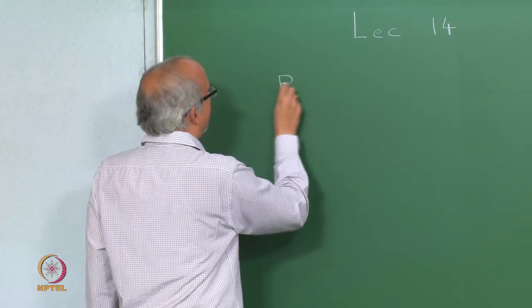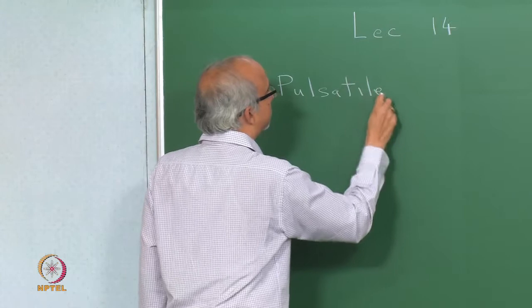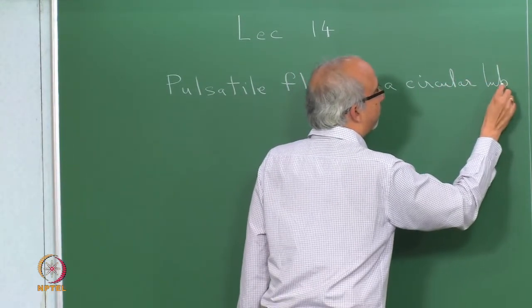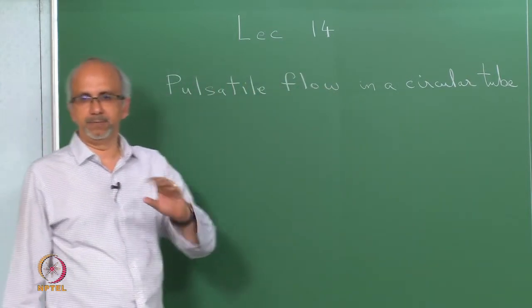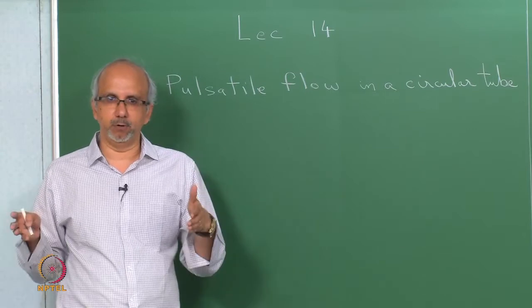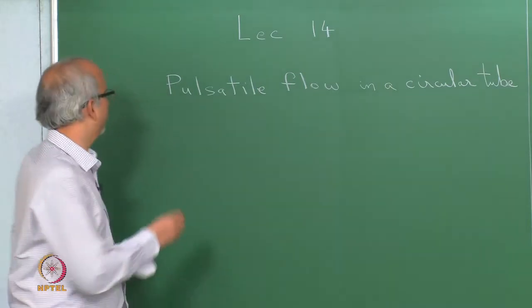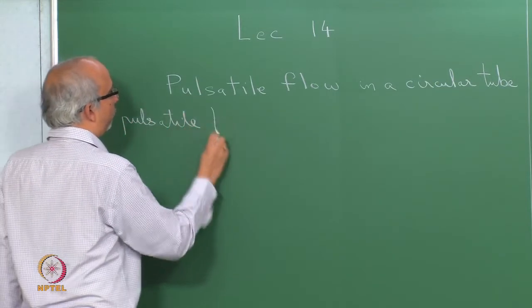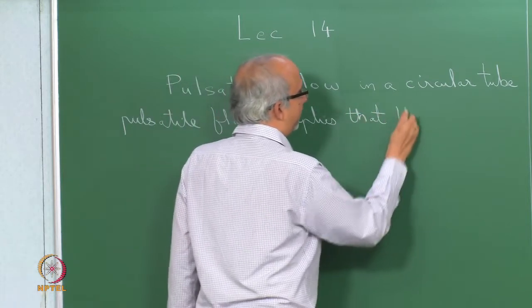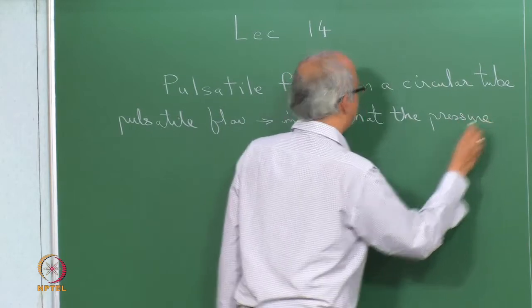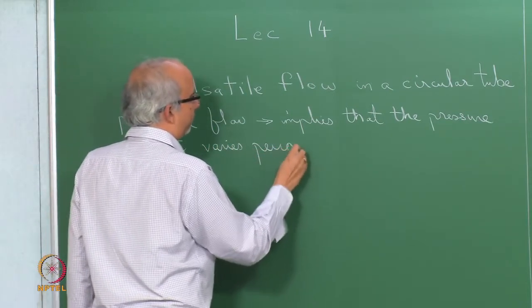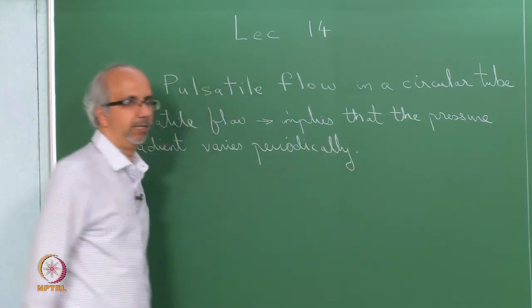The problem here is pulsatile flow in a circular tube. You have a circular tube with liquid flowing through it. By pulsatile flow, I mean that the pressure gradient being imposed is going to be varying periodically in time.